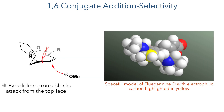We can look at the space-fill model of the compound to explain the stereochemical result of this reaction. The 1,6-addition only produces one enantiomer, which can be attributed to the steric hindrance of the pyrrolidine ring which blocks attack from the top face of the molecule.